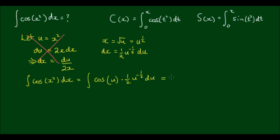Tidying this up, I can bring the half out the front, giving one half times the integral of 1 over root(u) times cos(u) du. Now we have an integral entirely in terms of u, and you might think we can easily integrate this using integration by parts. So let's do that.